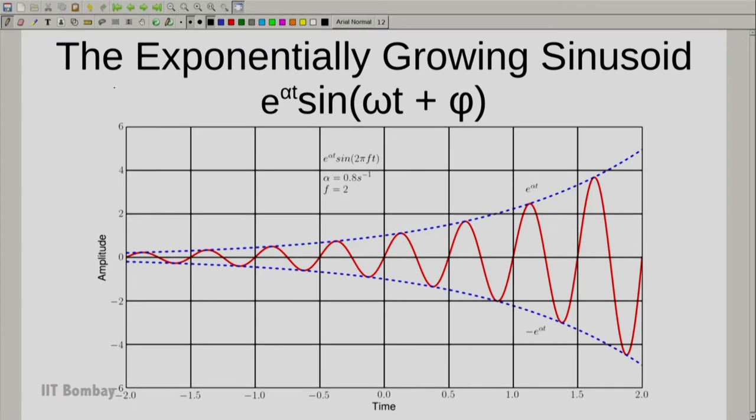And you can see that we have the envelope of the function which actually is e raised to the power of alpha t. And of course on the negative side it is negative e raised to the power of alpha t. And between that envelope you see the sine which is growing over time. And this is the exponentially growing sinusoid.